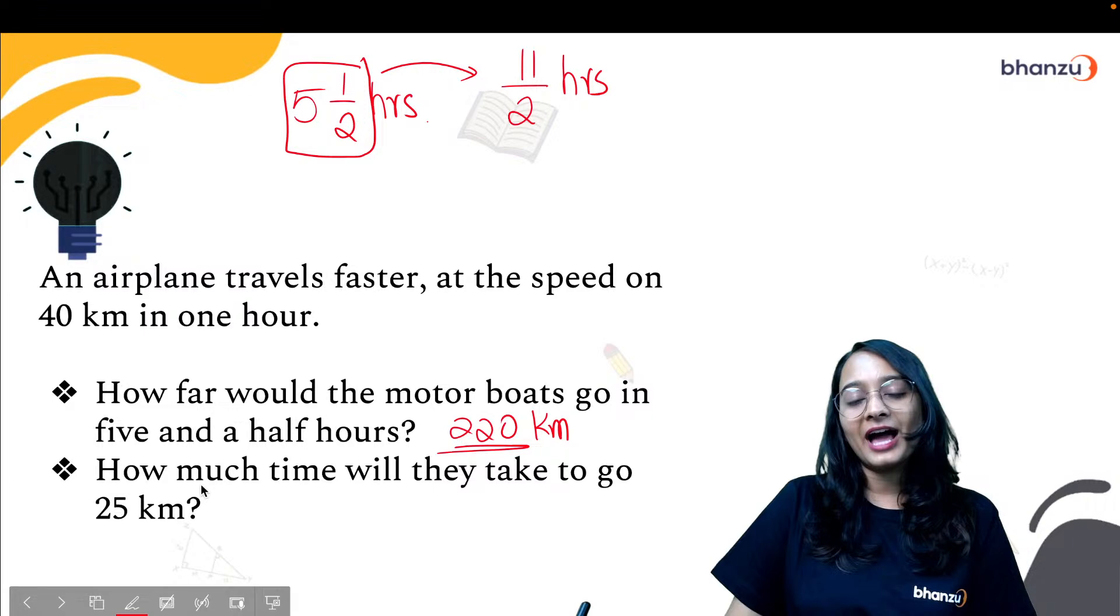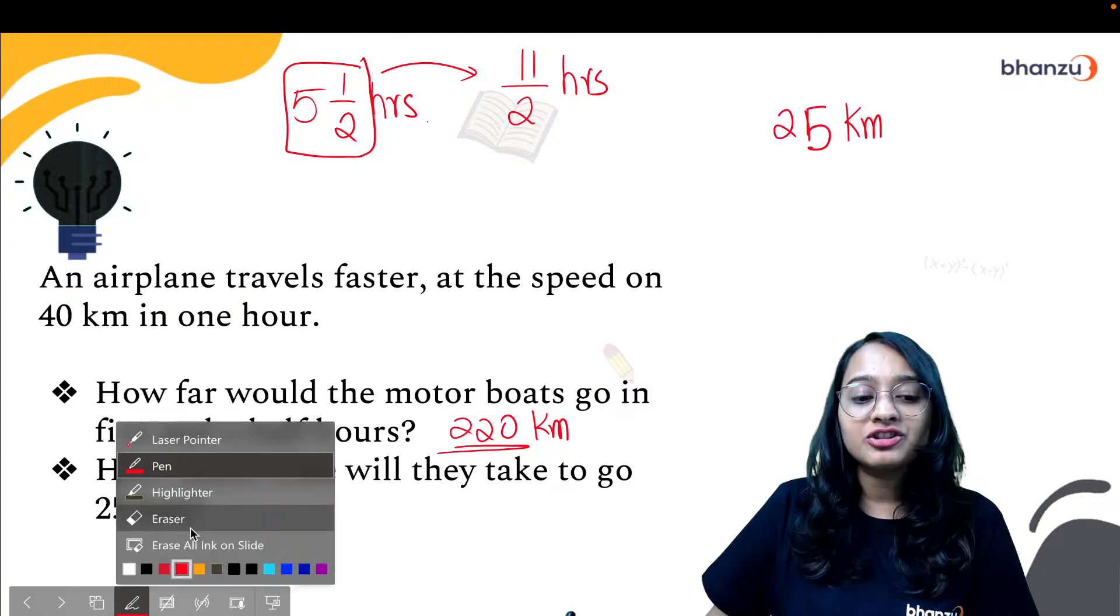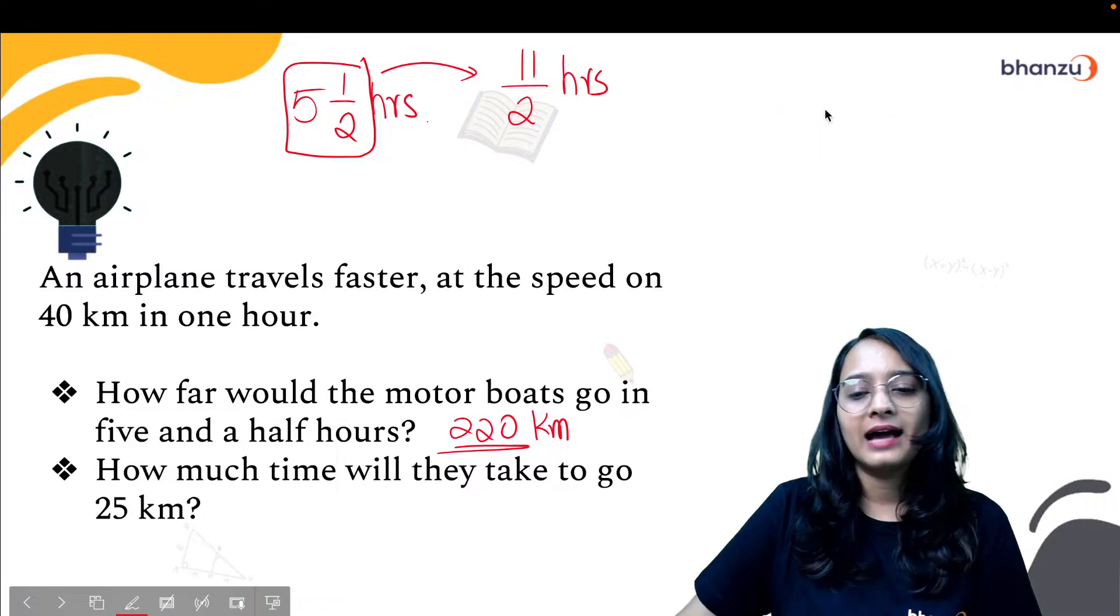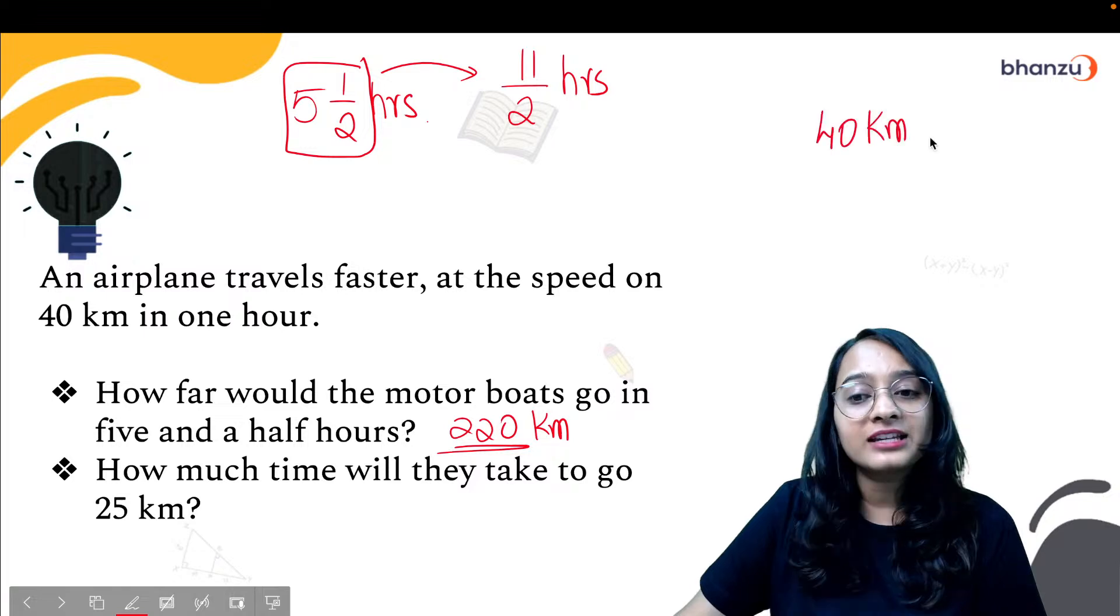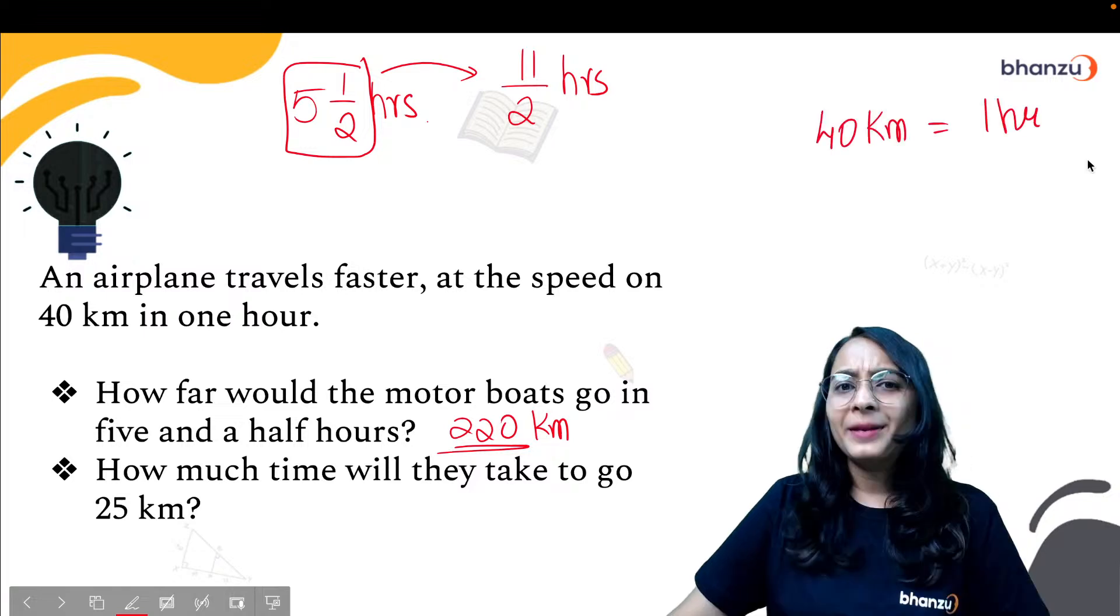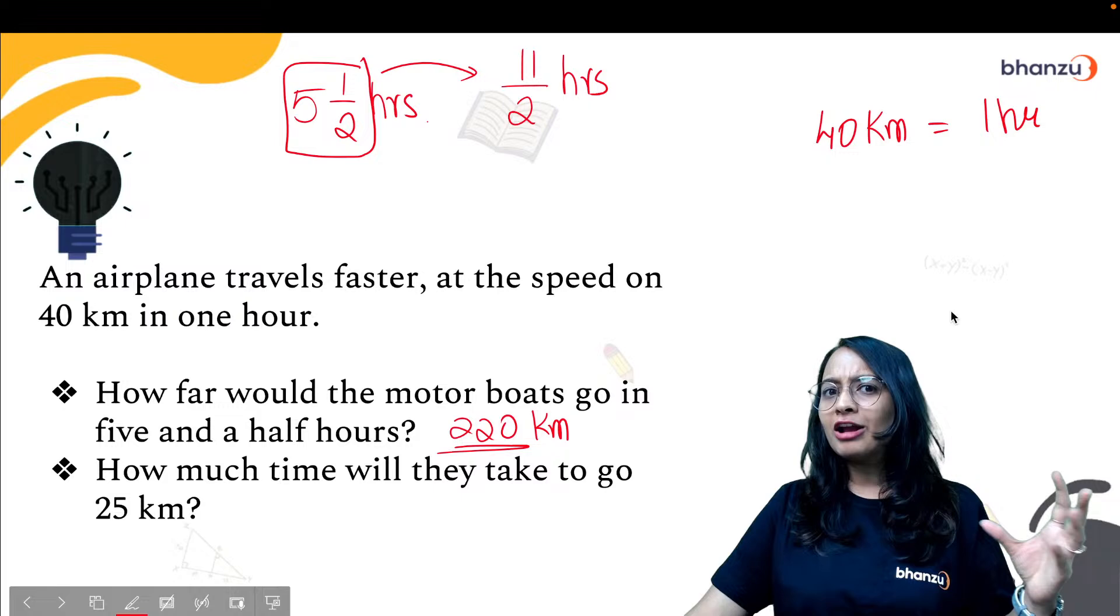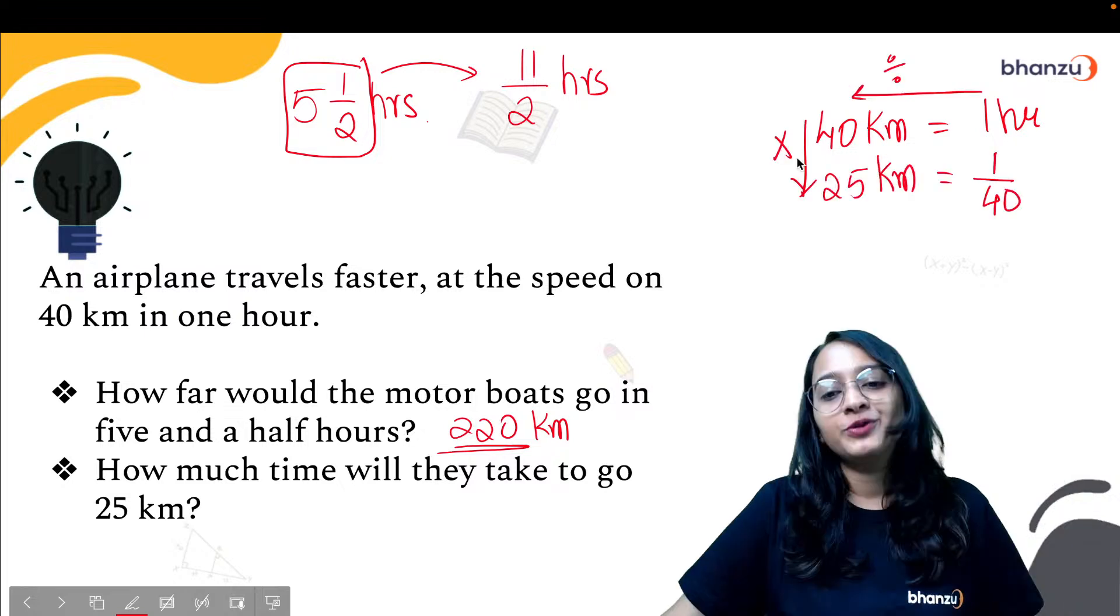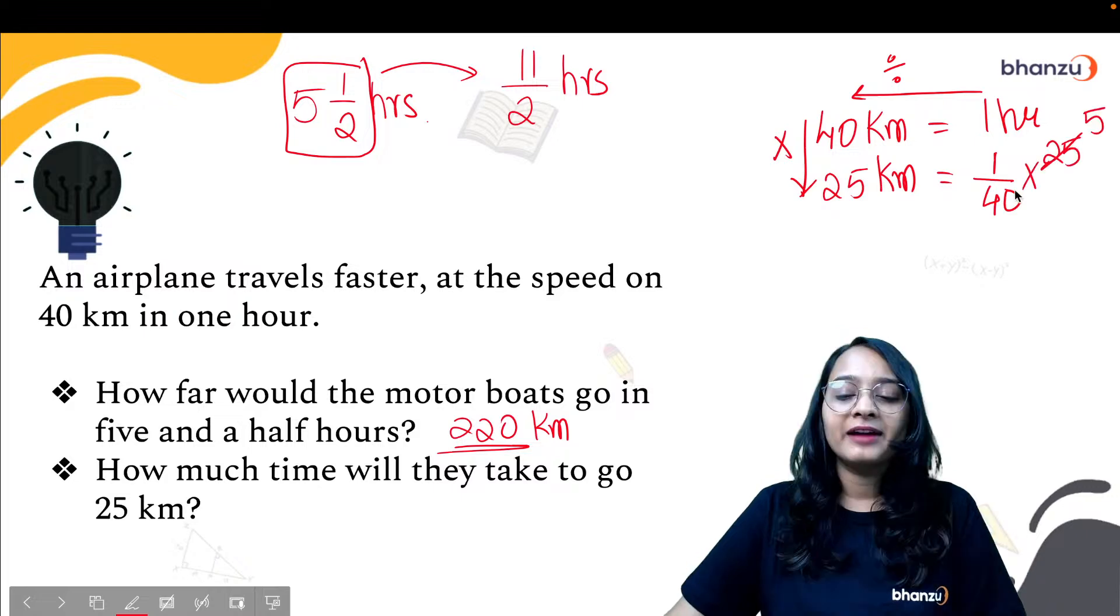Now the relation you will have to change. Now what is given? Your distance is given that it travels 25 kilometers. It is given that 40 kilometers it can travel in one hour, but how many kilometers do we want it to travel? Just 25 kilometers. So how would we calculate? As you move towards your left you divide. This is unitary method. 1/40, as you come down you multiply, multiplied with 25.